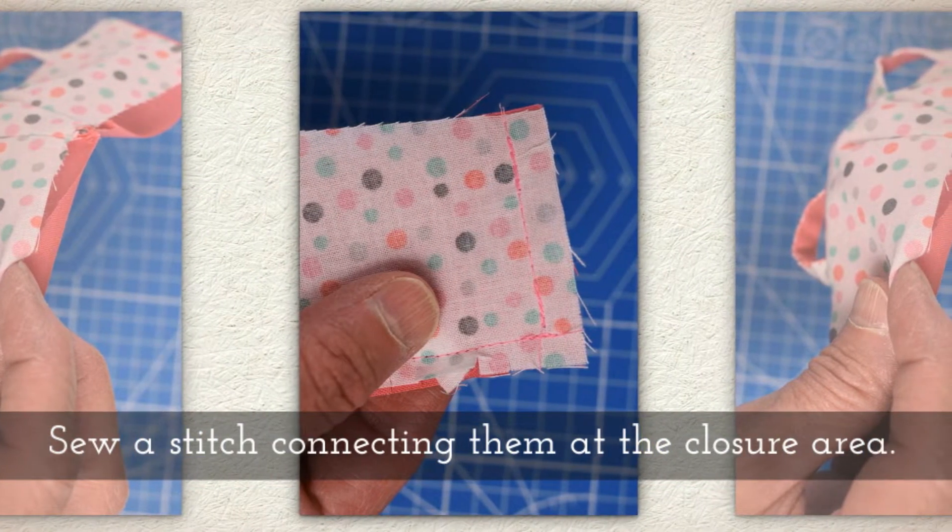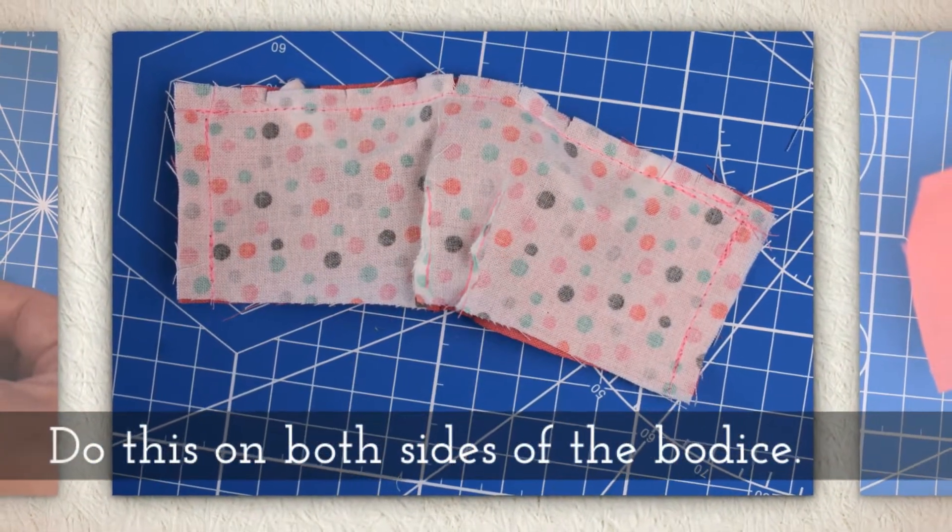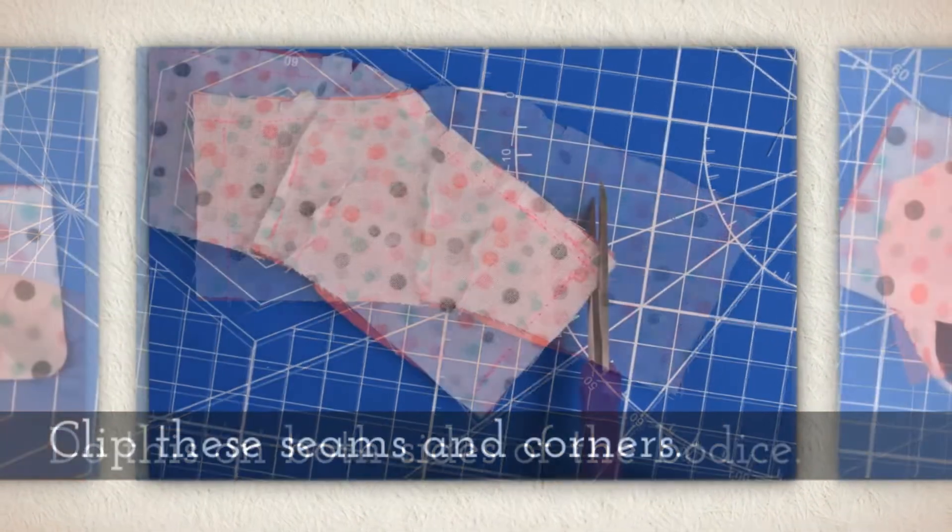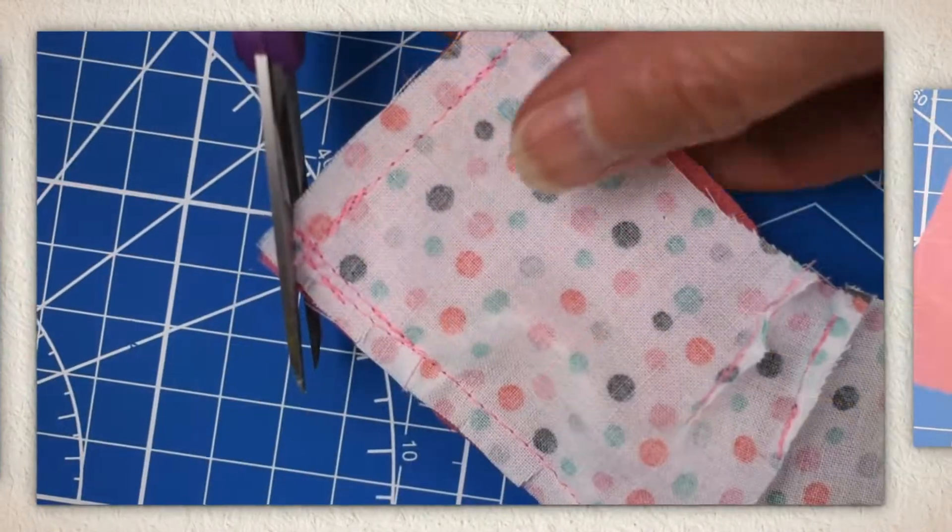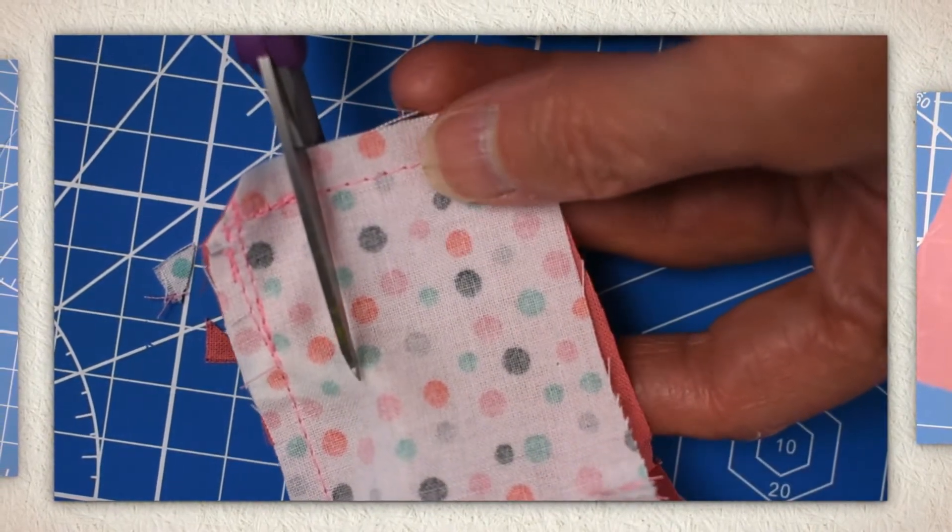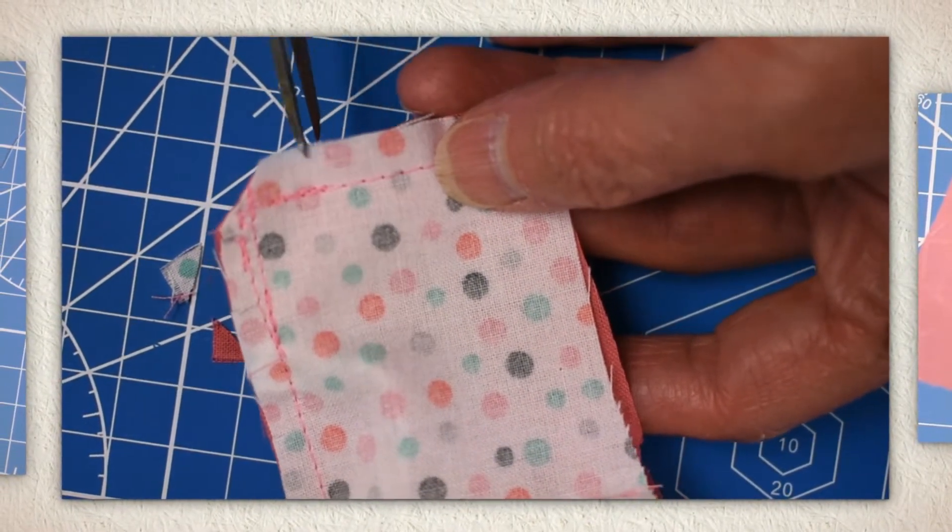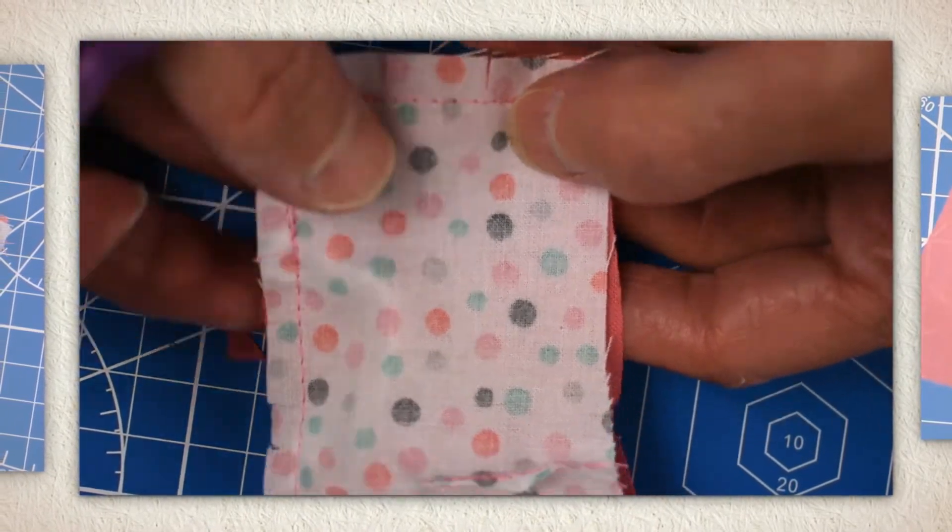Then sew a stitch connecting them at the closure area. Do this on both sides of the bodice. See my pink stitching? Clip these seams and corners. Again you want to be careful that you don't cross over the stitching you just did. Be very slow and careful when you do this. You'll do both sides.